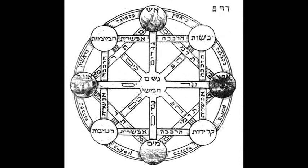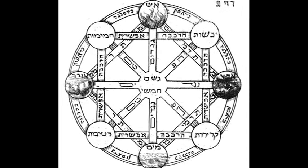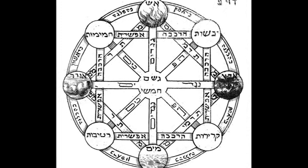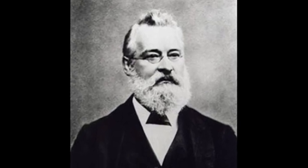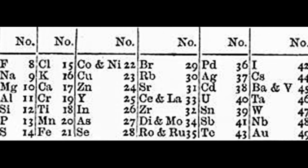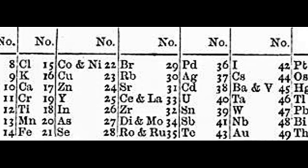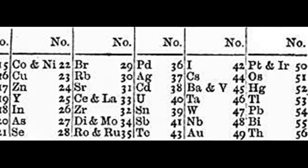Other scientists had been trying to find ways to arrange the elements since at least the middle of the 18th century. In 1864, just a few years before Mendeleev presented his periodic table, the British chemist John Newlands published his Law of Octaves, which classified the known elements into eight groups in order of their relative atomic masses.